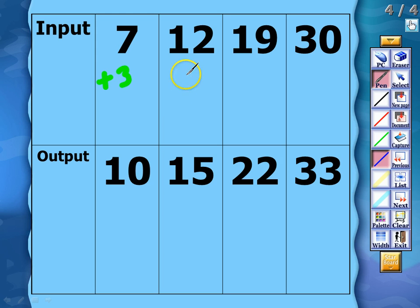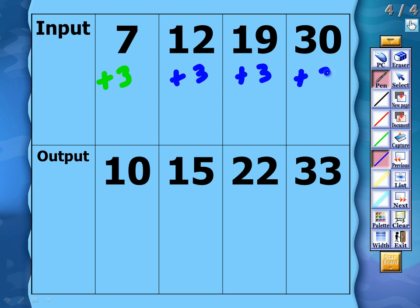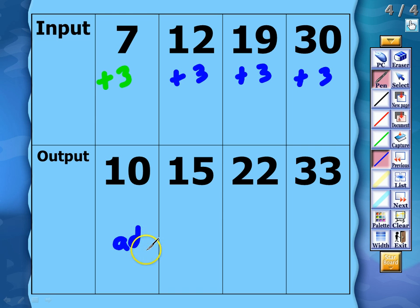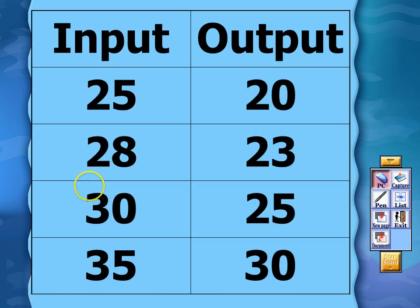Let's verify: adding 3 to 12 gives 15 — so far so good. Adding 3 to 19 gives 22 — so far so good. And adding 3 to 30 gives 33. The rule for this table — what's happening to each input to produce the output — is simply add 3.